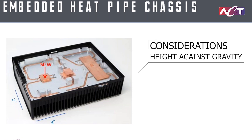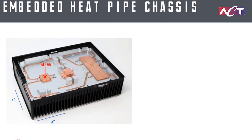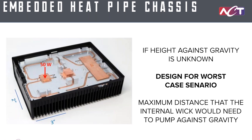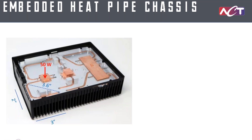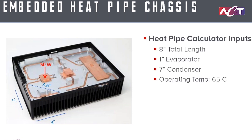The next step is to figure out the height against gravity — this is probably the most complex consideration with this type of geometry. If the system were sitting flat on a table, the height against gravity would be zero. But if it's going into a system where you don't know the orientation, you have to design for worst case. You need to find the maximum distance in the U that the wick structure would need to pump against gravity — in this case that's the diagonal section, about 3.6 inches.